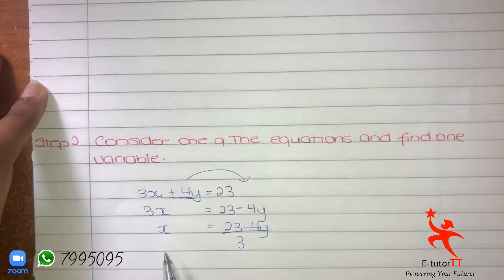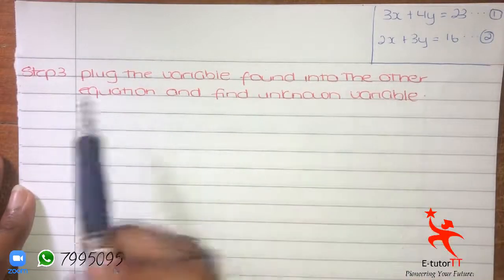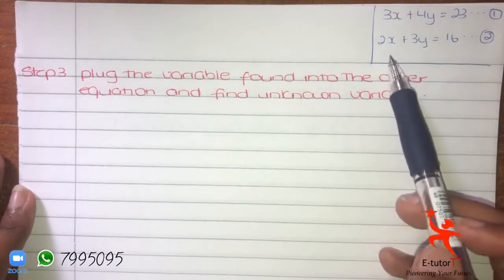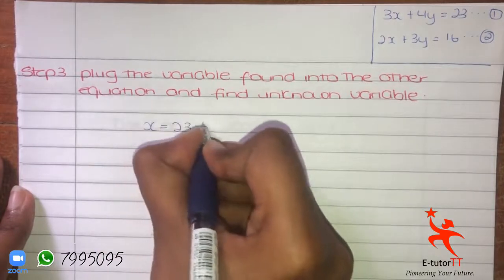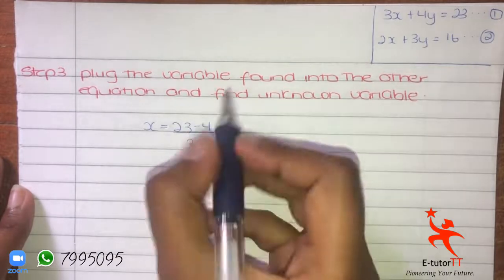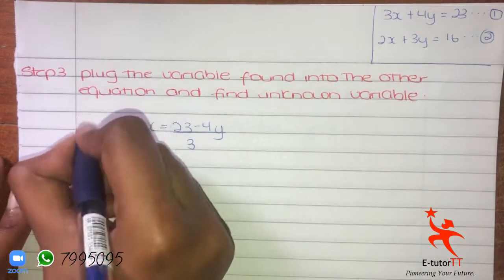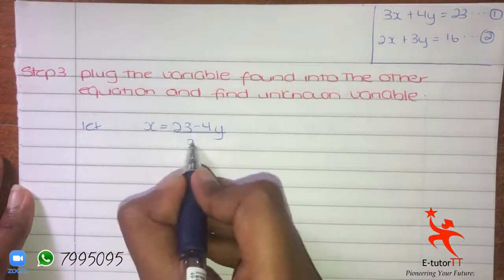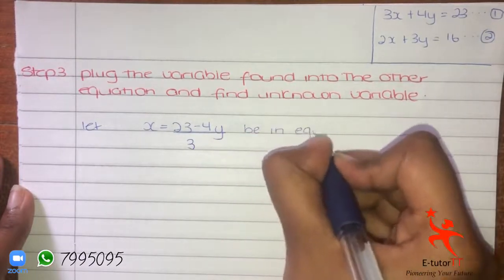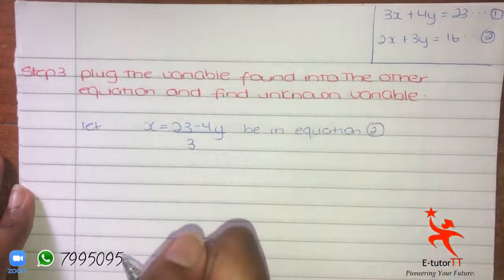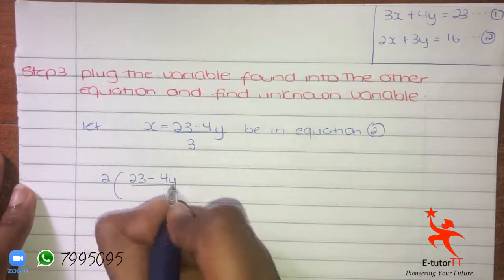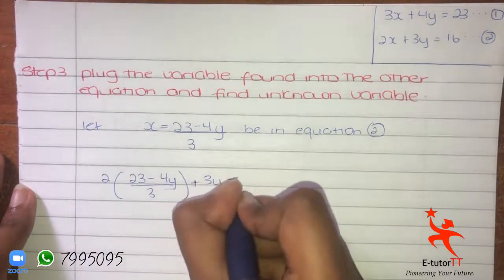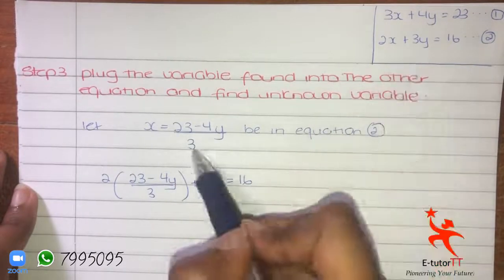Now we have the value of X: X = (23 − 4Y) / 3. The next step is to plug the variable found into the other equation and find the other one. We used equation 1 and found X, so now we plug X into equation 2. Substituting X = (23 − 4Y) / 3 into equation 2, it becomes: 2 × (23 − 4Y)/3 + 3Y = 16.